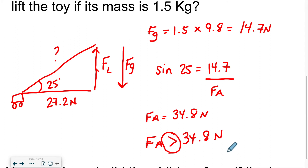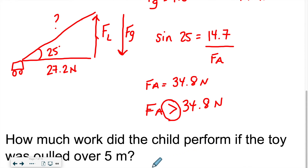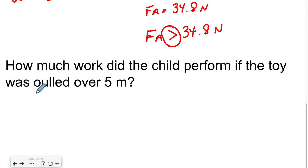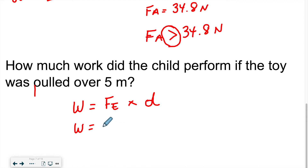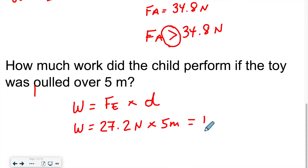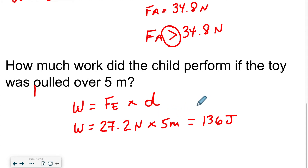How much work did the child perform if the toy was pulled over five meters? To find work, we use: W = effective force × distance. The effective force was 27.2 Newtons and the distance is 5 meters, giving W = 136 Joules. Always work with the effective force — it's the force parallel to the movement times the distance traveled.